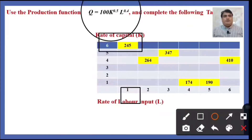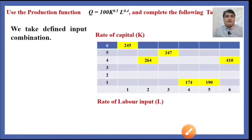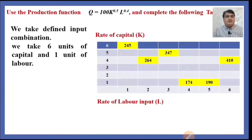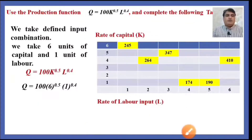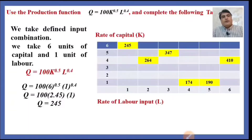Using this production function, by employing 6 units of capital and 1 unit of labor, the producer obtains 245 units of output. How is this computed? We take 6 units of capital and 1 unit of labor and plug them into Q = 100K^0.5 × L^0.4. By solving it, we get total output = 245. It has been proved that with 6 units of capital and 1 unit of labor, the total output is 245 units.